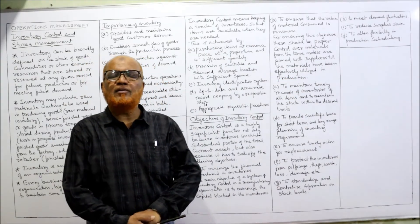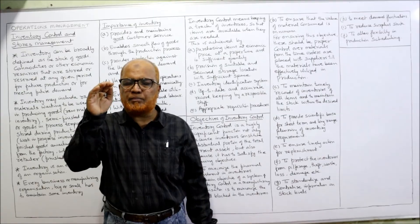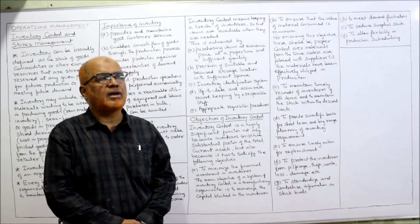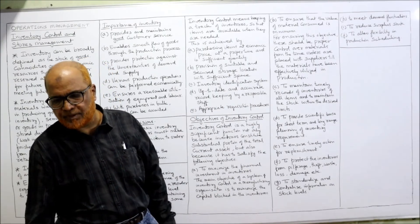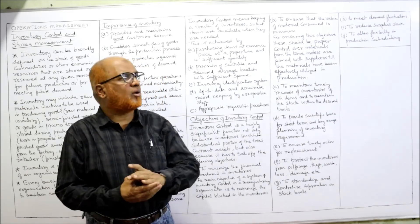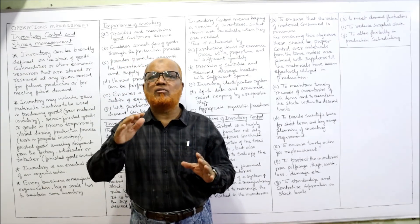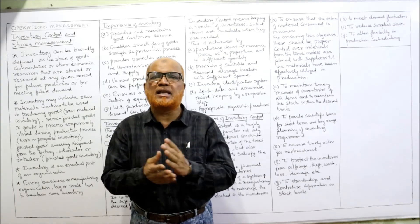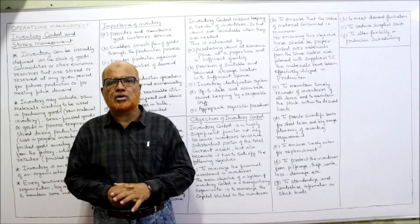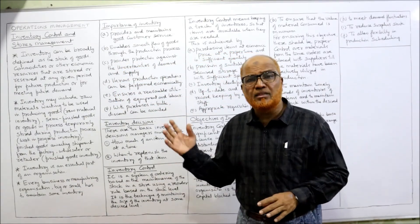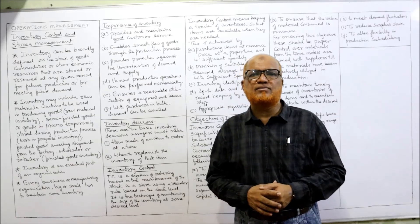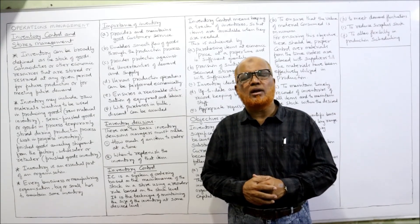To reduce surplus stock — if any surplus stock exists, it should be kept at a minimum, because keeping unnecessary surplus stock means money is blocked and profitability comes down. To allow flexibility in production scheduling — as market demand and supply is uncertain with fluctuations, production scheduling will also have ups and downs, sometimes more production and sometimes less. So sufficient inventory should be maintained. In this video, I have explained the meaning of inventory, the importance of inventory, inventory control, and the objectives of inventory control. The next topic I will take up in the next video.